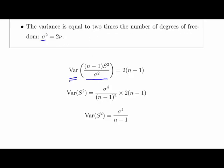So the variance of this is equal to two times the degrees of freedom of that chi-squared random variable, which is n minus one, which is to say, two times n minus one.